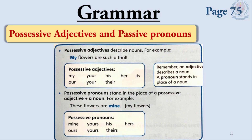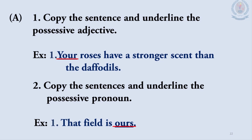Let's go to possessive pronouns. Possessive pronouns stand in the place of a possessive adjective plus a noun. For example: 'These flowers are mine.' Here the possessive pronoun is 'mine.' You are given some other possessive pronouns: mine, yours, his, hers, ours, yours, theirs. Part A: Copy the sentences and underline the possessive adjectives. The first one is done for you: 'Your roses have a stronger scent than the daffodils.' The possessive adjective is 'your.'